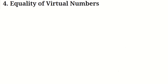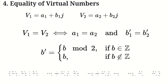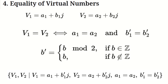Equality of virtual numbers. Let's move on to the concept of equality between virtual numbers. Two virtual numbers are equal if their real parts are equal, and their virtual coefficients, after applying the coefficient rule, are also equal. So if you have two virtual numbers, V1 and V2, for them to be equal, the real part of V1 must be exactly the same as the real part of V2, and the virtual coefficient of V1, after applying the coefficient rule, must match the virtual coefficient of V2.